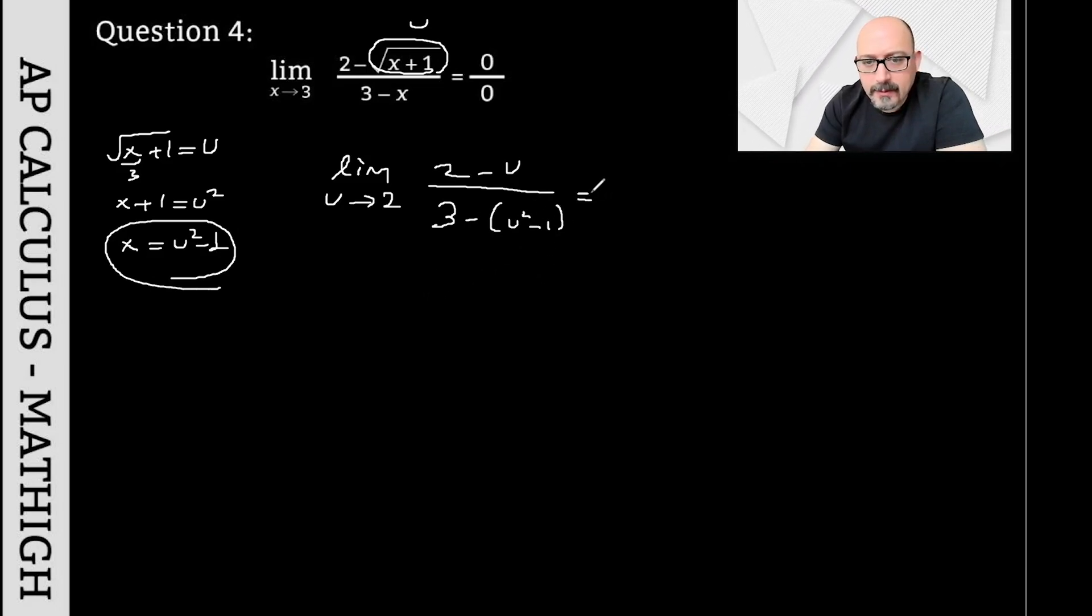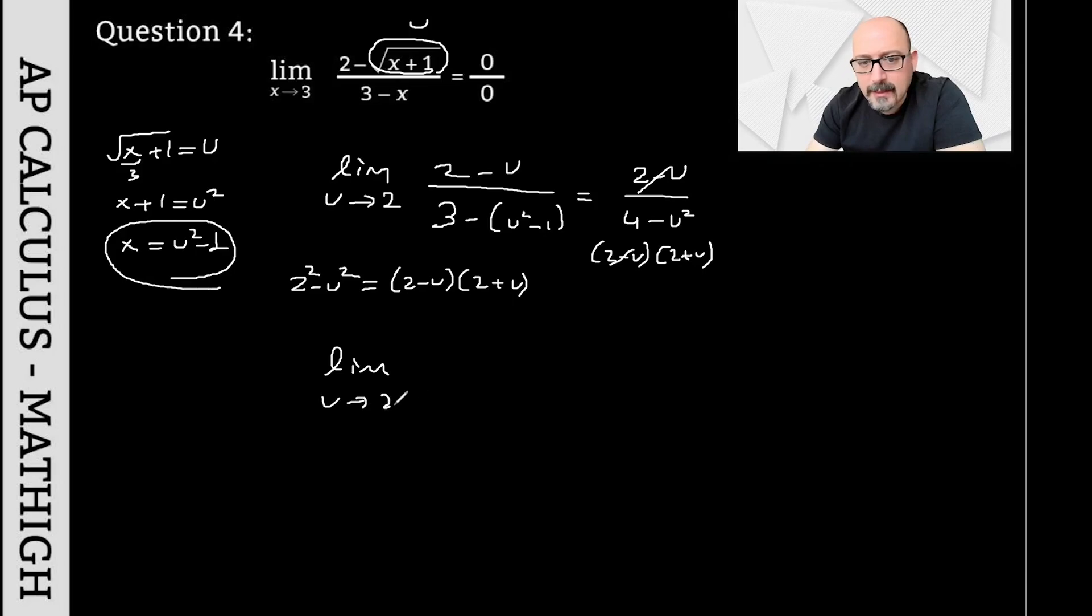If we tidy up this equation, we get (2-u) over (4 - u²). I'm thinking of 4 minus u squared as the square of 2 minus u squared, so I'm applying the difference of squares: (2-u) times (2+u). From here, by simplifying, I got rid of the (2-u) terms. So as the limit approaches u equals 2, we got 1 over (2+u). By writing 2 in place, we found the answer to the problem as 1 over 4.